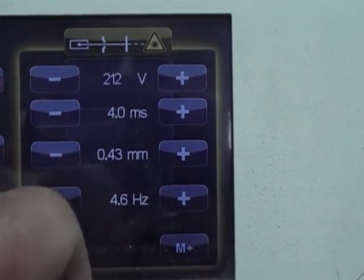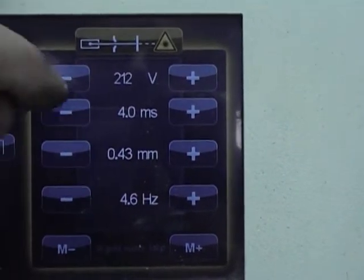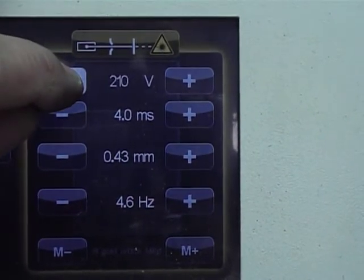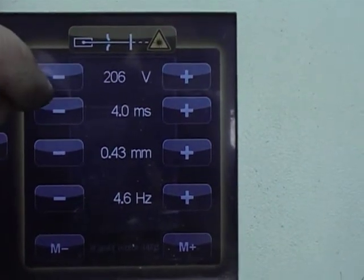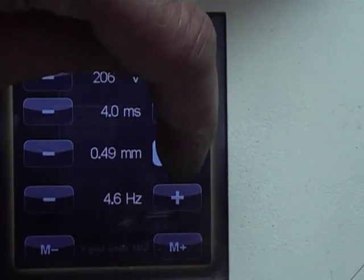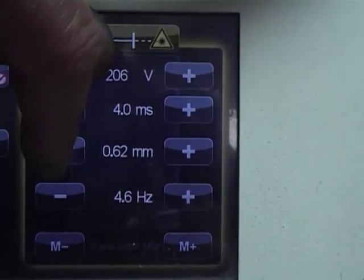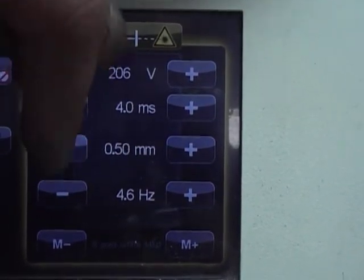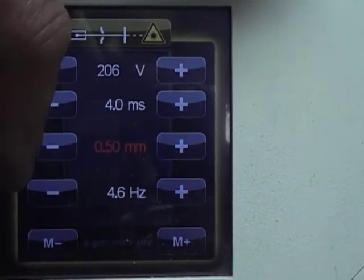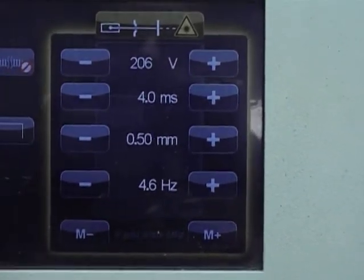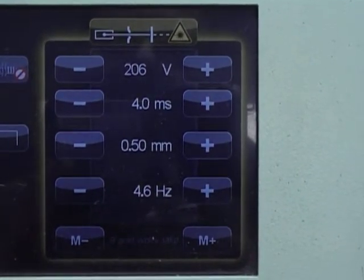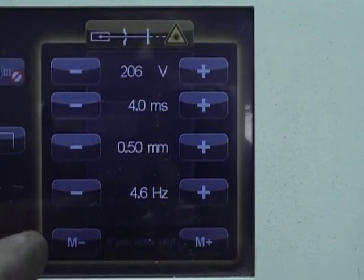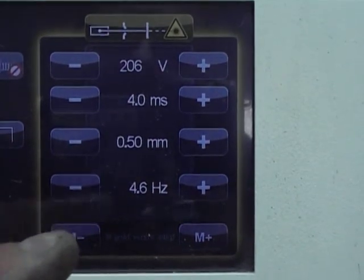Now that's the settings that we normally use for just a regular ring. But in general, if you're just going to size a ladies Tiffany type style mounting, just turn it down to about 206. Turn this up to about 5.0 and we leave it at about 4.6. That's what we generally use for general sizing like a Tiffany style ring using this laser.